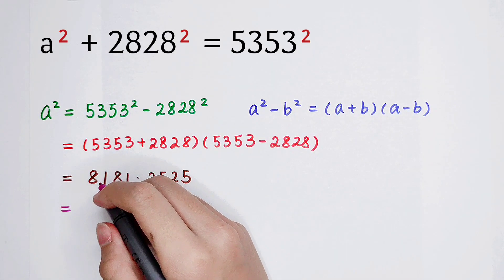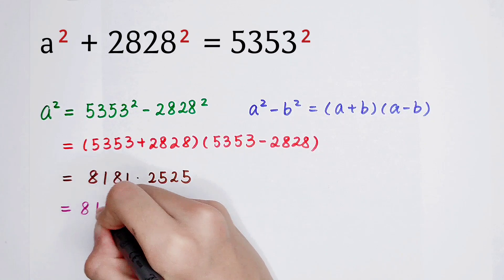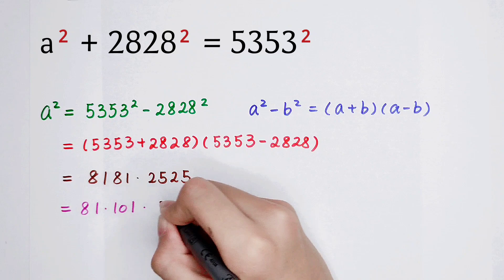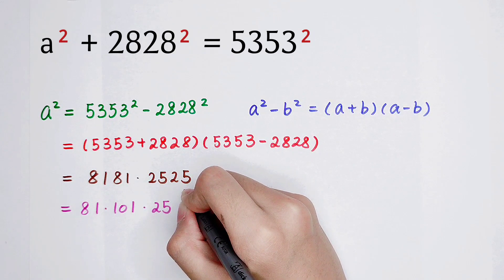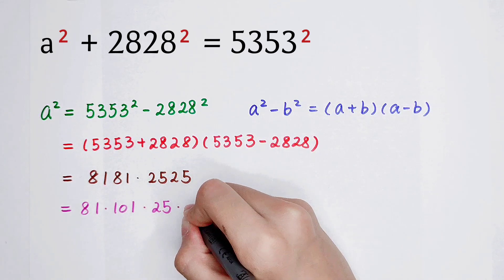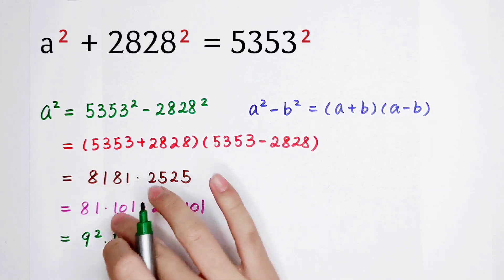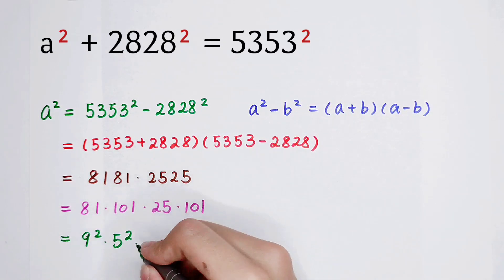Now, 8181 can be written as 81 times 101, and then times 2525 can be written as 25 times 101. Because 81 is 9², and 25 is 5². And here, 101 times 101 is 101².